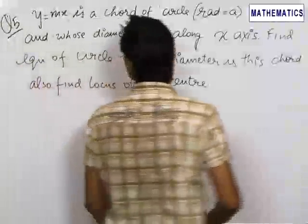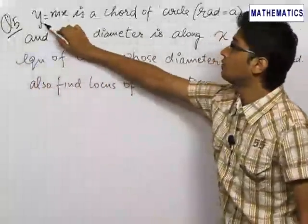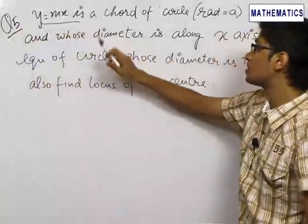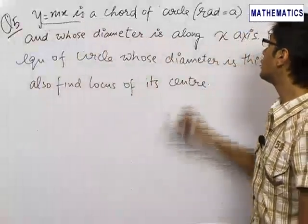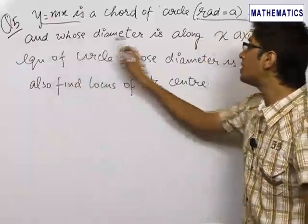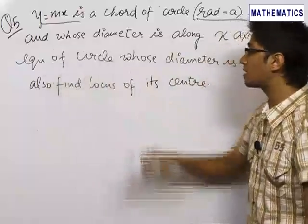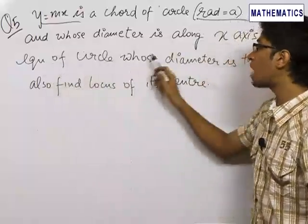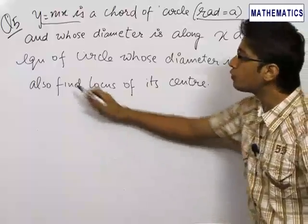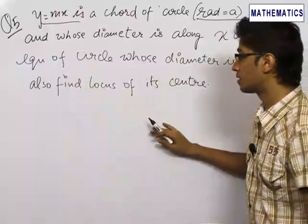This next question is a very good question. We are given that y equals mx, a line through the origin, is a chord of a circle having radius equal to a and whose diameter is along the x-axis. We want to find the equation of that circle whose diameter is that chord y equals mx, and we also need to find the locus of the center of the circle.